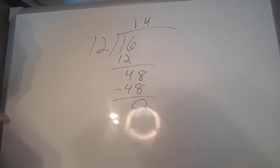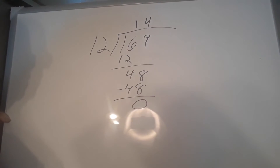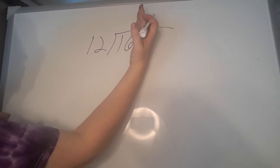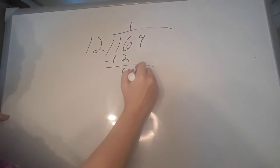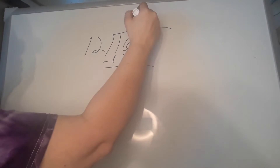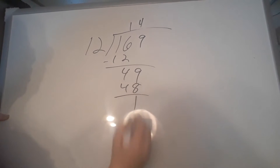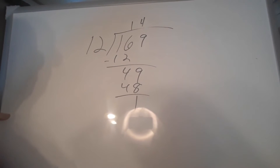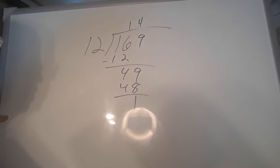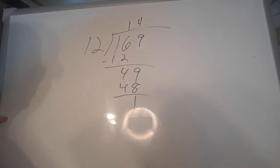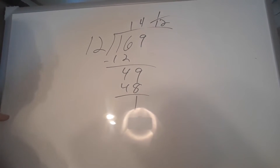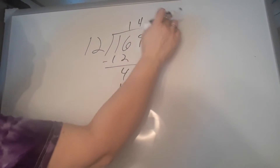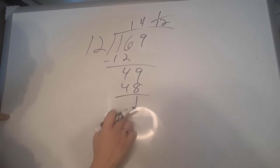Let's look at what happens if this wasn't a nice even number — what if this was a 9 instead? The 12 goes into the 16, we subtract that off, we get 4, then the 9 comes down. We still get 48, but we have 1 left over. That depends on whether you want your answer in fractions or decimals. Having your answer in fractions is easier — all you do is copy this 1 and put the 12 underneath, because 1/12 is quite literally 1 divided by 12, and that's what's left over.